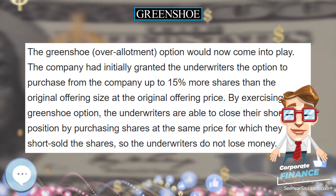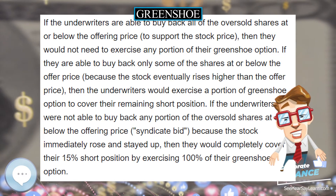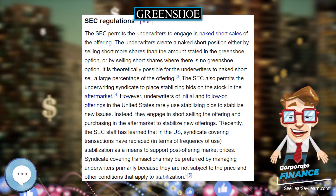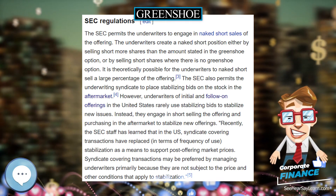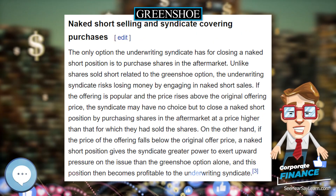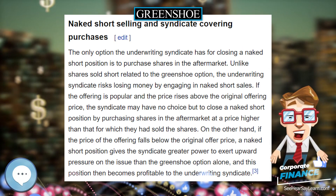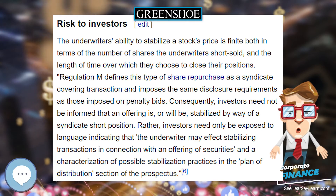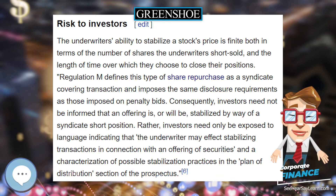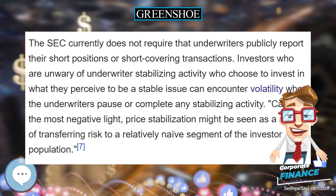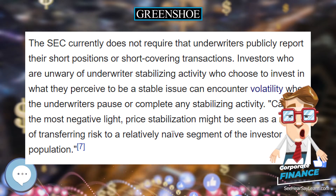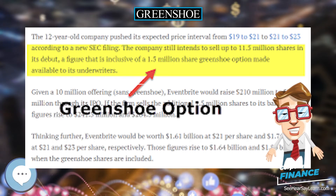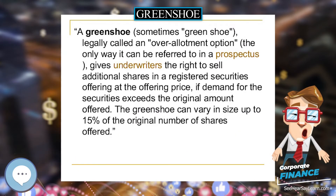The only option the underwriting syndicate has for closing a naked short position is to purchase shares in the aftermarket. Unlike shares sold short related to the green shoe option, the underwriting syndicate risks losing money by engaging in naked short sales. If the offering is popular and the price rises above the original offering price, the syndicate may have no choice but to close a naked short position by purchasing shares at a higher price than that for which they sold them.